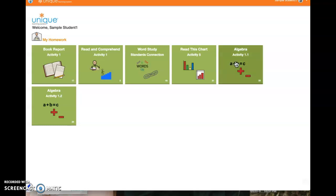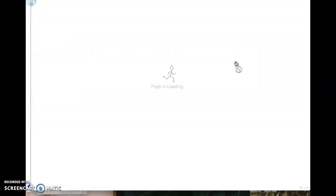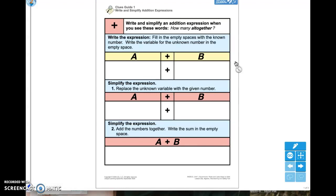We are going to start with Algebra Activity 1.1. So when we go in here, we're explaining what Algebra is. And basically, Algebra is finding out what we are missing. It says write and simplify an addition expression when you see these words, how many all together. So what we need to remember is this word right here, all together means that we are adding.